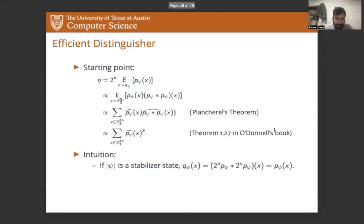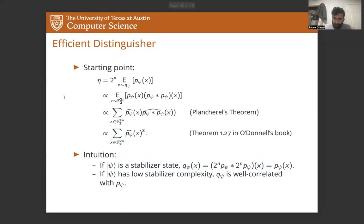Some intuition for why that's the case. The first thing to note is that if psi is a stabilizer state, then Q psi is equal to P psi. And in that case, eta will be equal to one. And if psi is close to being a stabilizer state, it has a non-negligible overlap with some stabilizer state, then Q psi remains well correlated with P psi. And the way we finish off this proof is proving a lower bound on this three norm in terms of the stabilizer fidelity. And for details on that, best to refer to our manuscript.